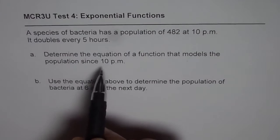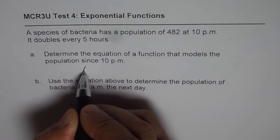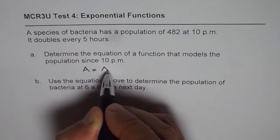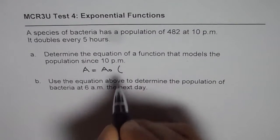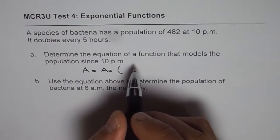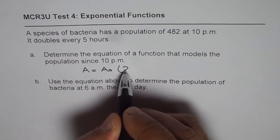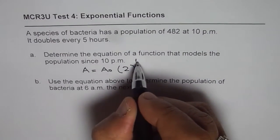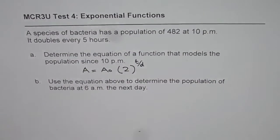When you have to model, we have to write the formula which is A equals to initial population times, this is the rate at which it increases, so it is doubling, so it is 2 to the power of T over doubling time, so that is the formula for us.